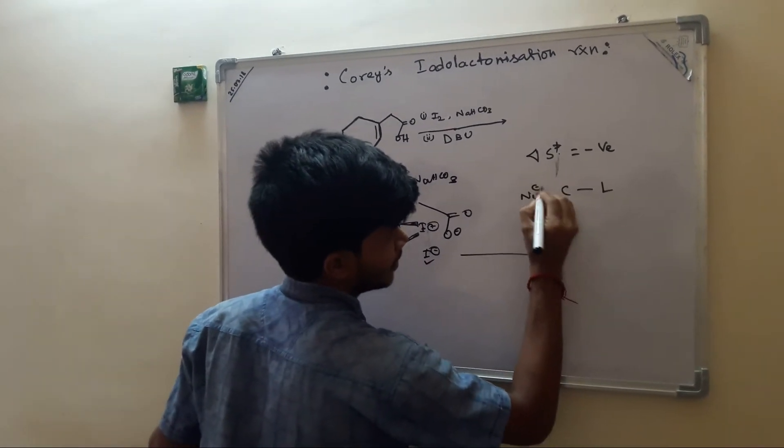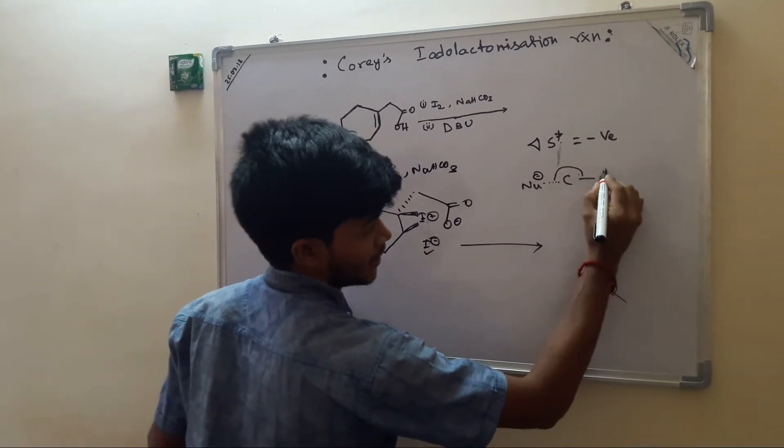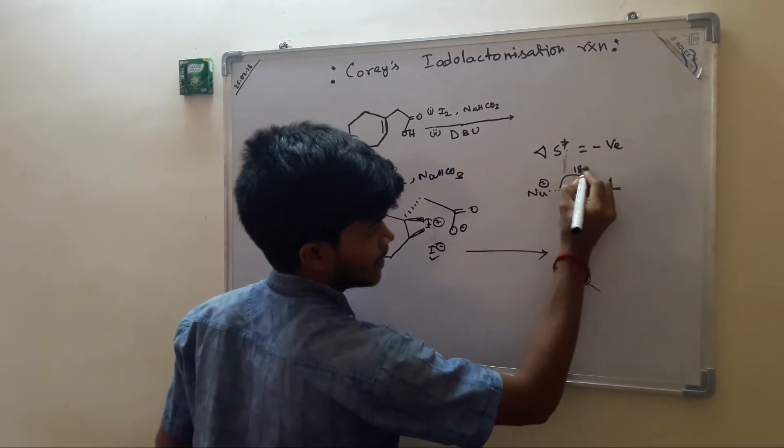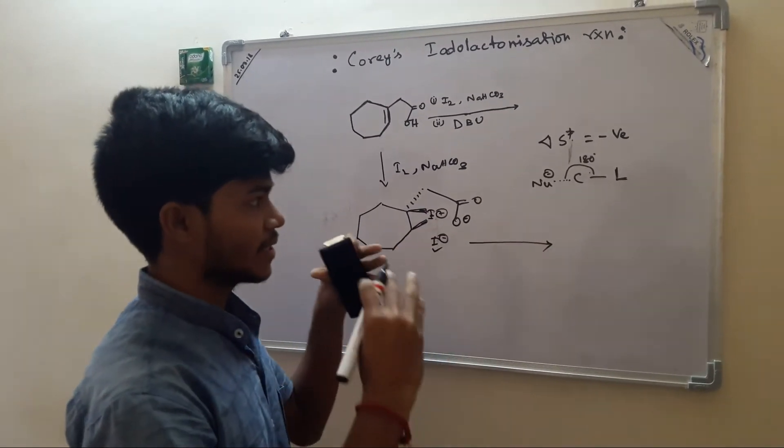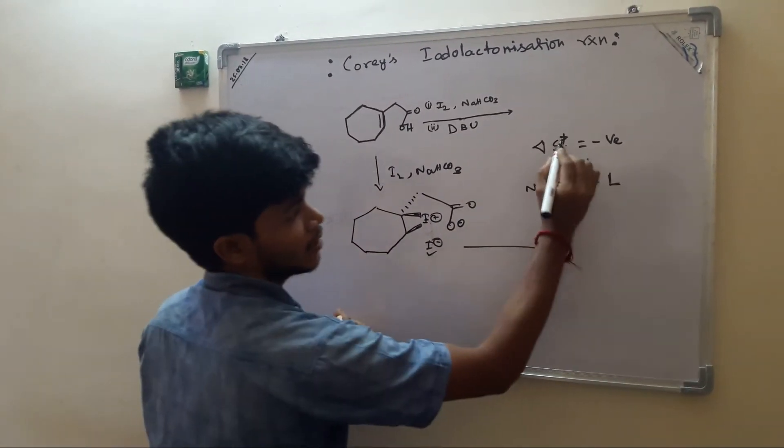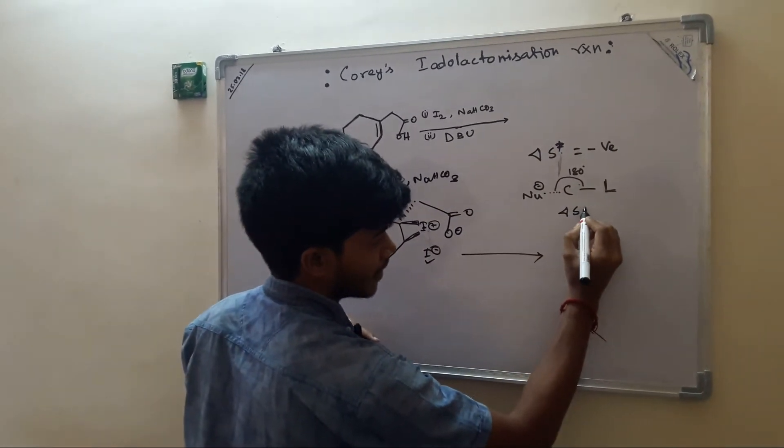For example, in SN2 reaction, nucleophile has to come to the opposite side of the leaving group at 180 degree angle. So as they have to come in specific orientation, Delta S double dagger is negative for intermolecular reaction.